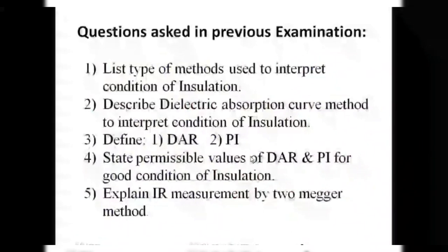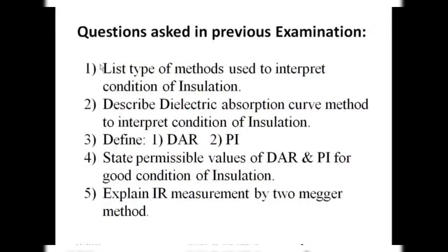From the student's point of view, let's look at questions asked in previous examinations on this topic. The first question frequently asked is: list the types of methods used to interpret the condition of insulation. The answer includes all four methods we covered: dielectric absorption curve, dielectric absorption ratio, polarization index, and IR measurement by two meggers.